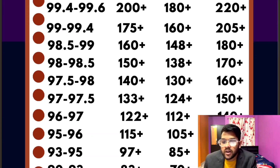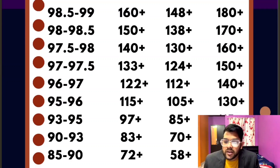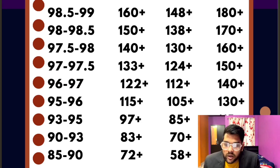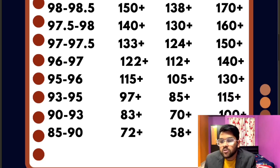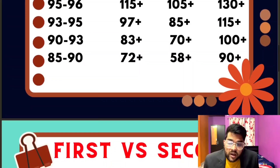For 90 percentile, you need 100+ marks for easy paper. The middle column is for hard paper and the first column is for moderate paper. For 85 to 90 percentile, 90 marks are required.